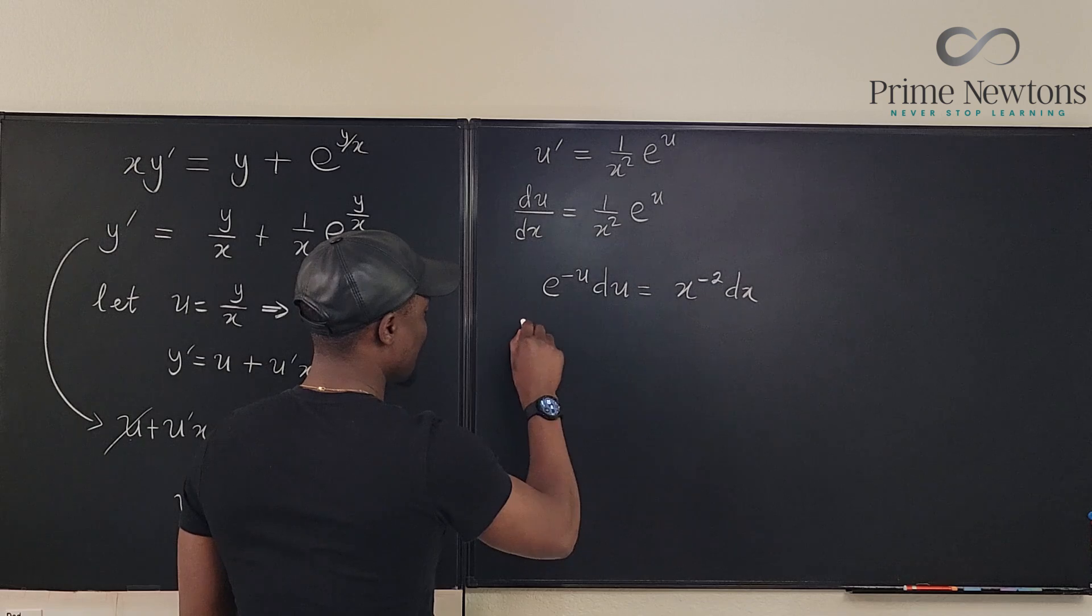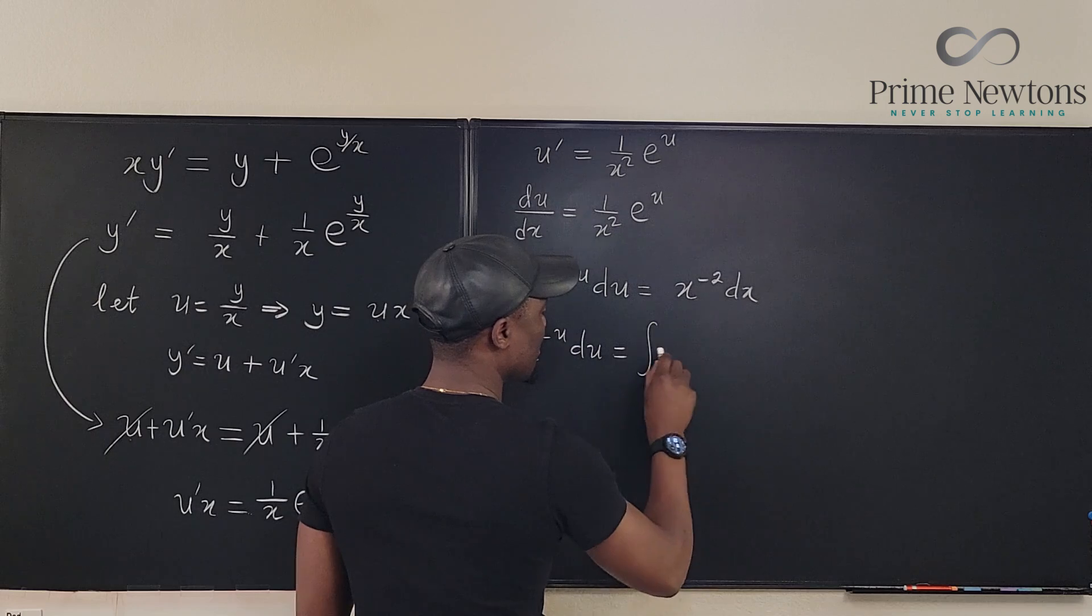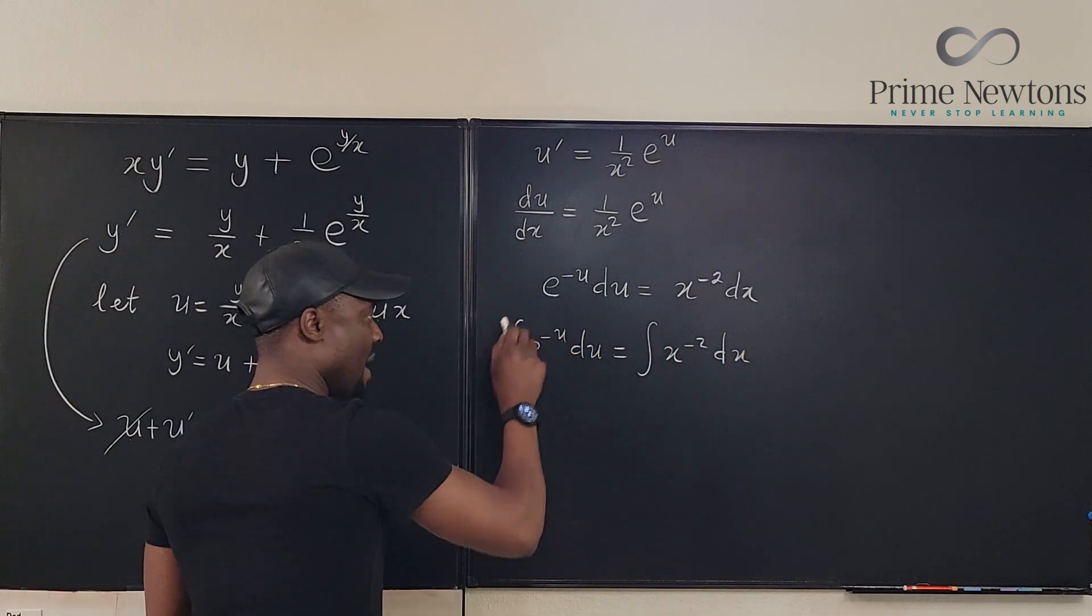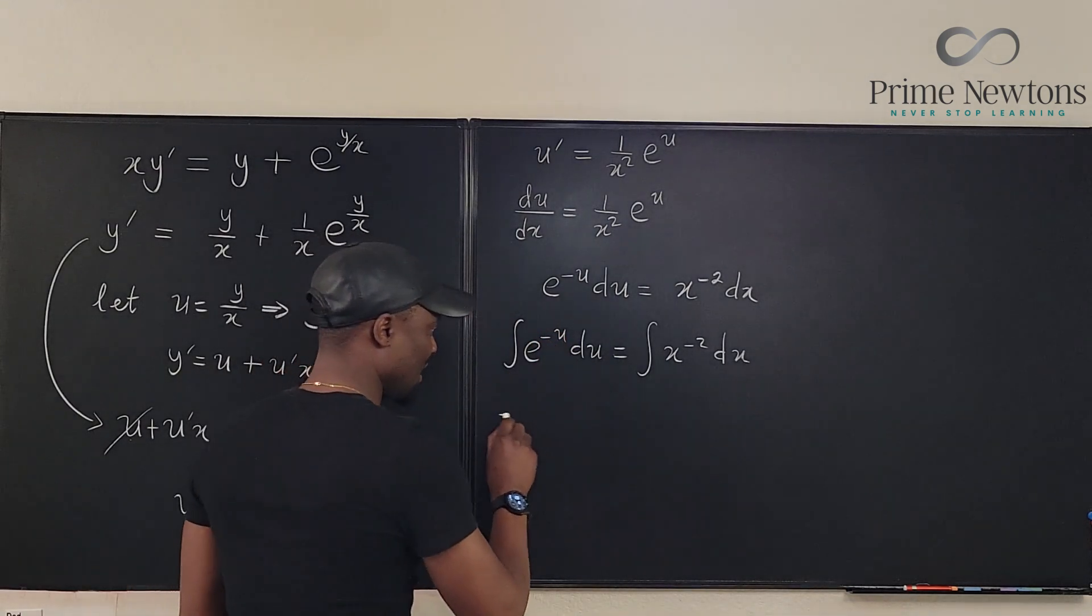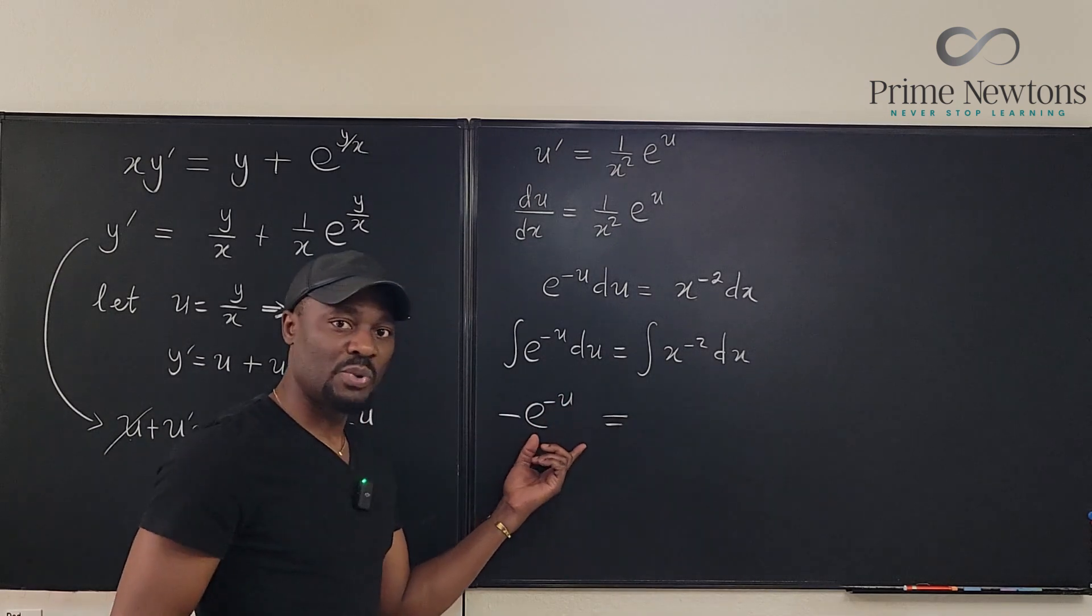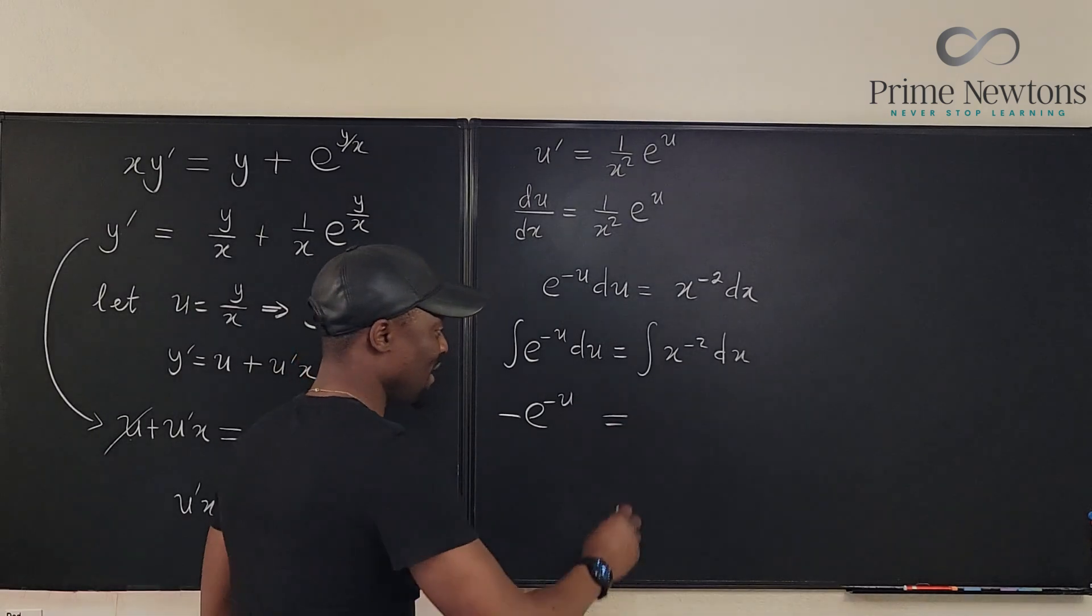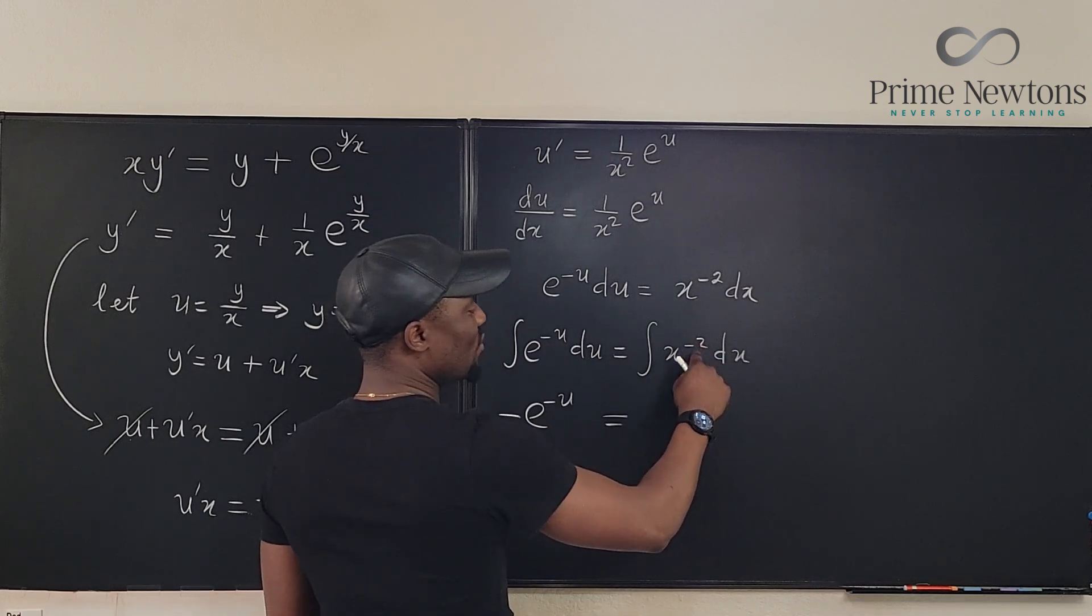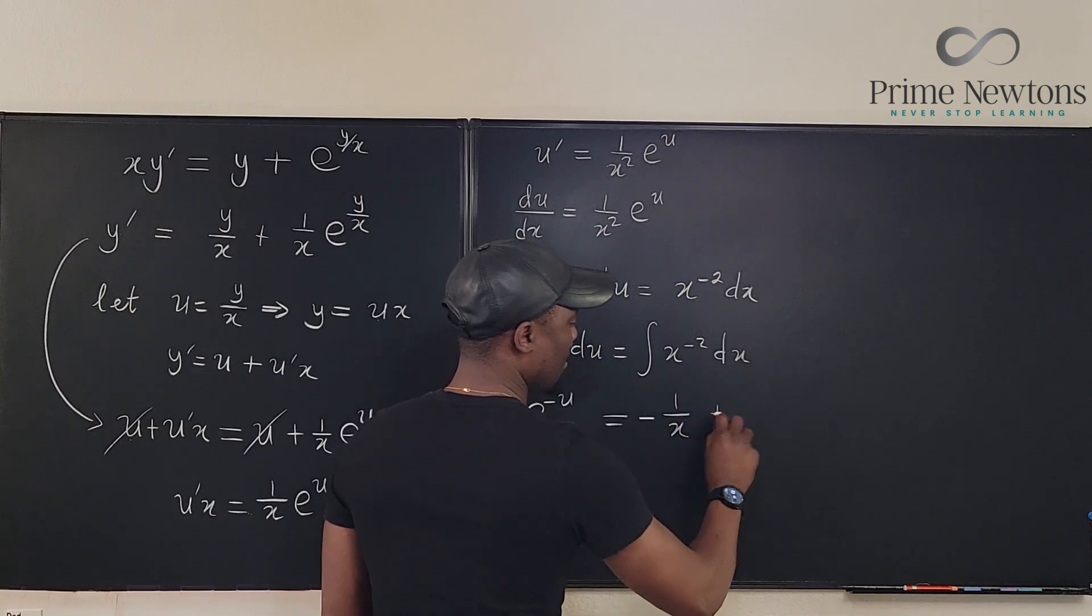What do we have? The integral of e to the negative u du will be equal to the integral of x to the negative 2 dx. So remember if we integrate e to the negative u, the derivative of this is going to show up which is negative e to the negative u. Traditionally we'll just add all the c's to the right hand side, so wait until we're done. Here what do we have? We have if we integrate this it's going to be x to the, add 1 to this it's minus 1 divided by minus 1, so it's negative 1 over x. That's what you get here plus c.